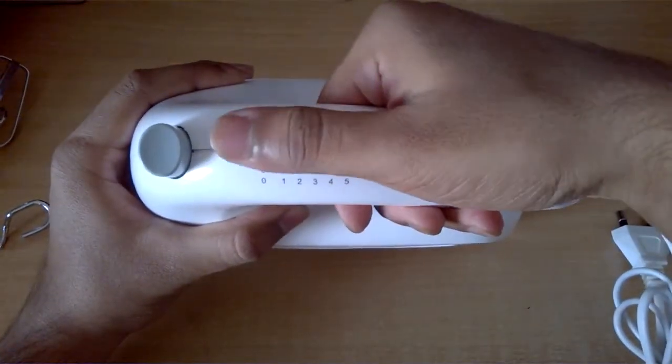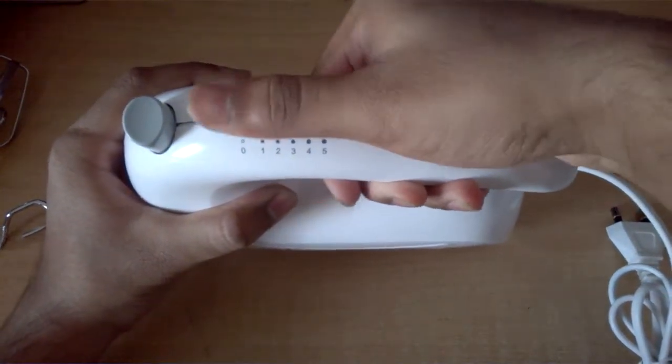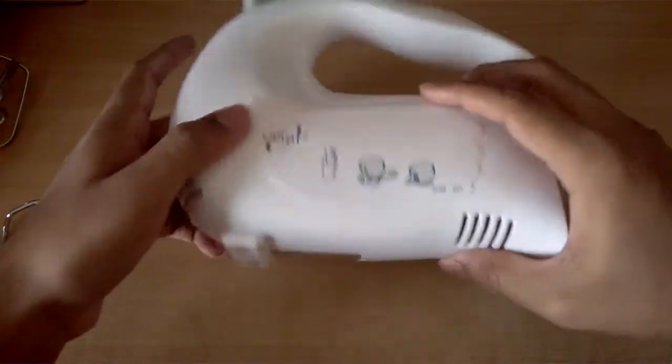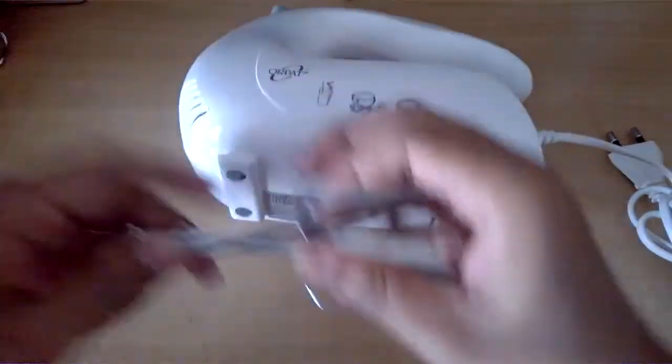Here are the five different speed options, one two three four five. This is how it looks. Now let me show you how to place this thing, let me show you the beaters.